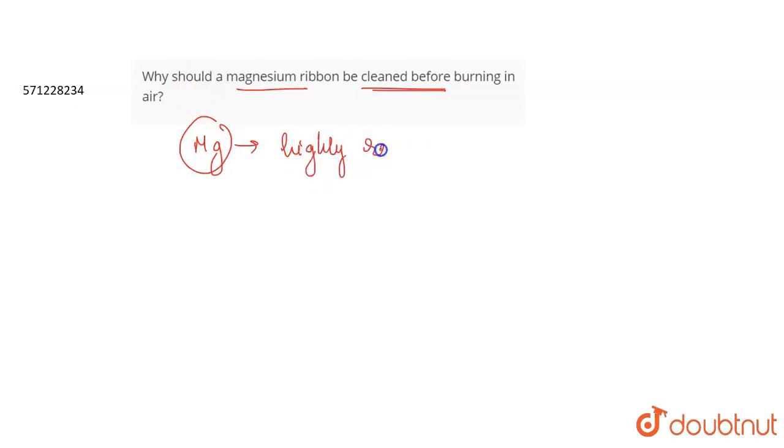Magnesium is a highly reactive metal. So, what happens when magnesium is exposed to air? When magnesium is exposed to air, a layer of magnesium oxide is formed.